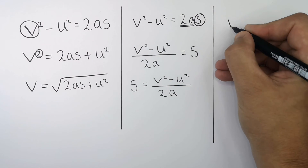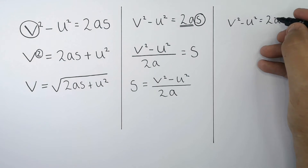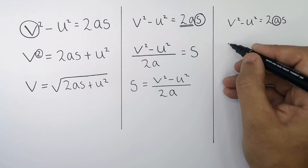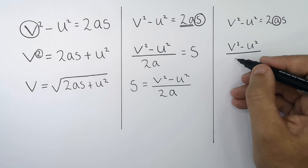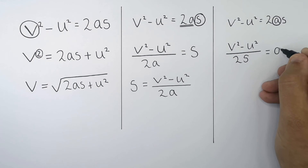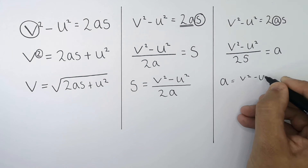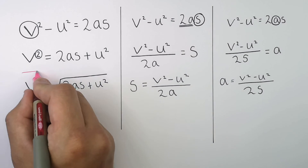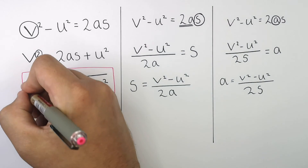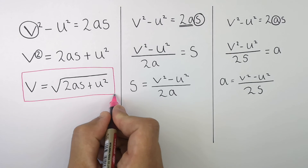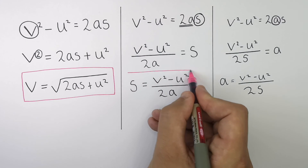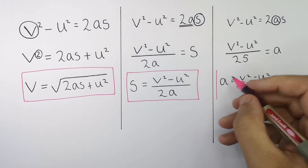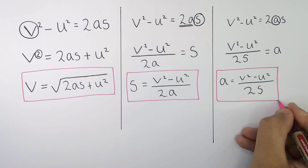To rearrange V-squared minus U-squared equals 2AS for the subject A — acceleration — that gives A equals V-squared minus U-squared divided by 2S. So to summarize: V equals the square root of 2AS plus U-squared; S equals V-squared minus U-squared divided by 2A; and A equals V-squared minus U-squared divided by 2S.